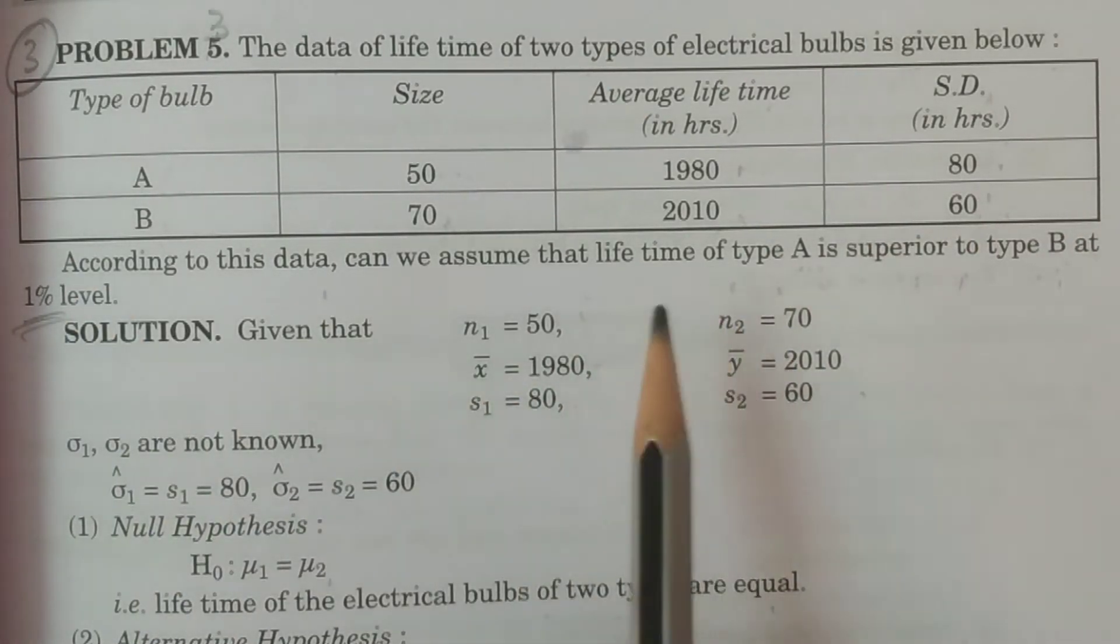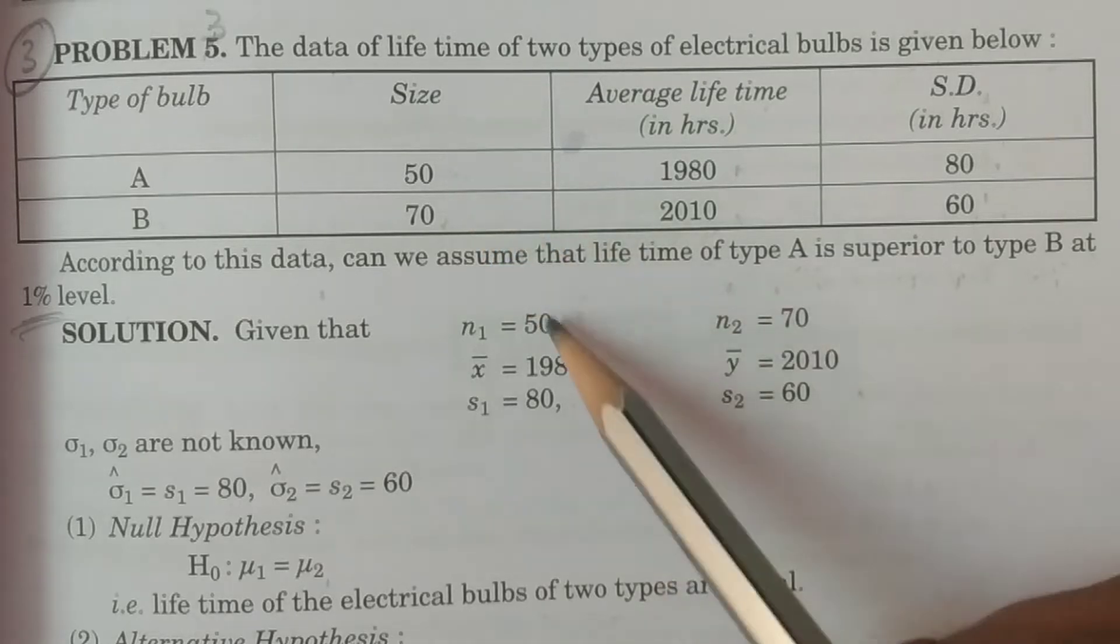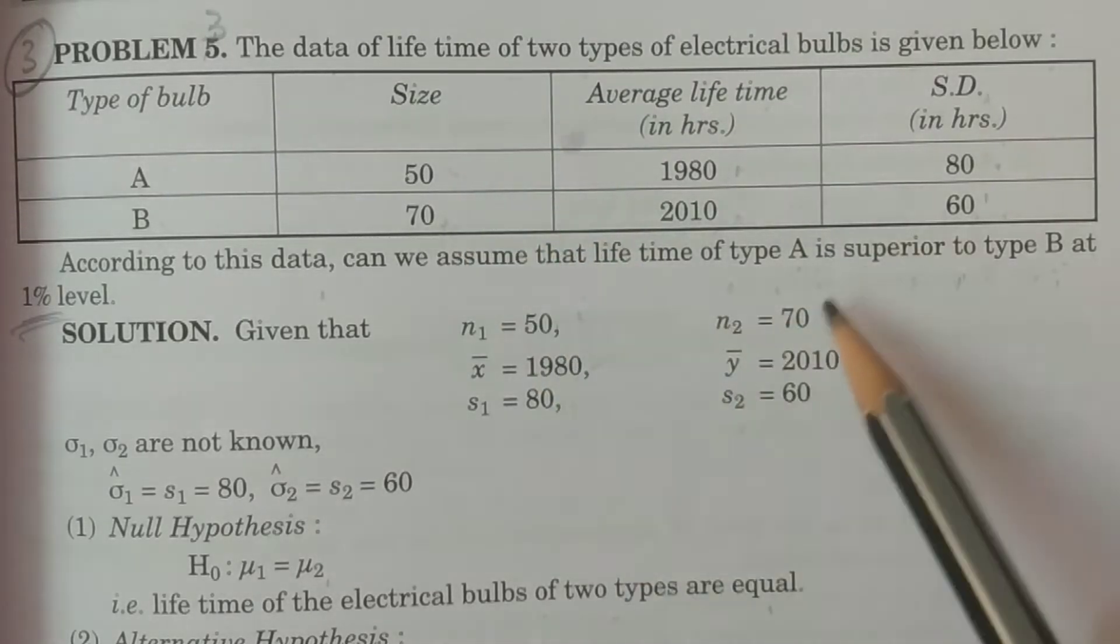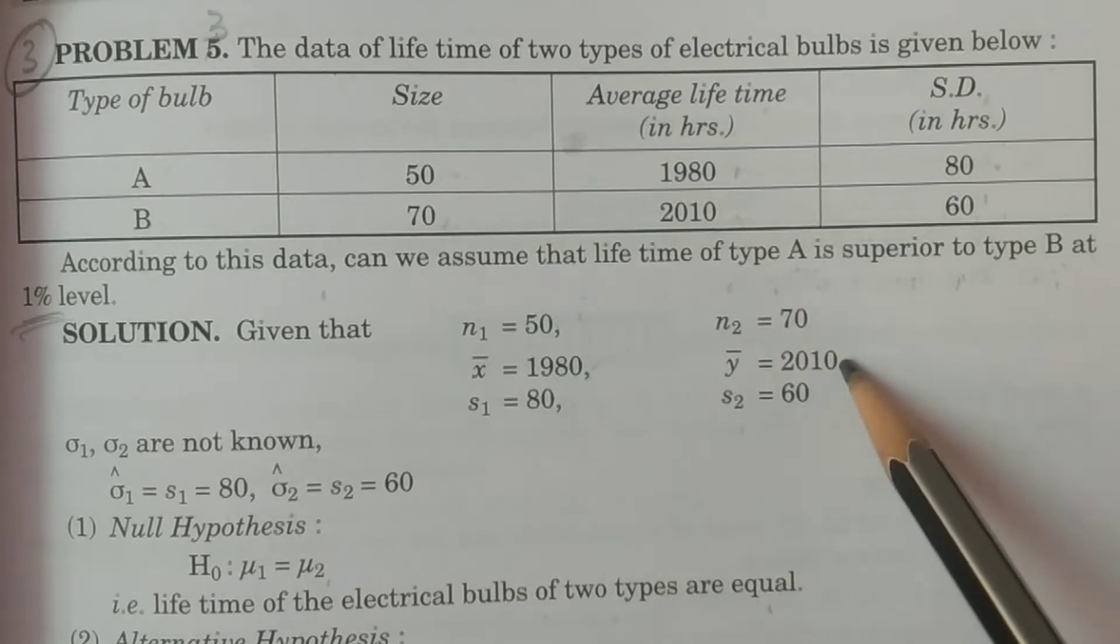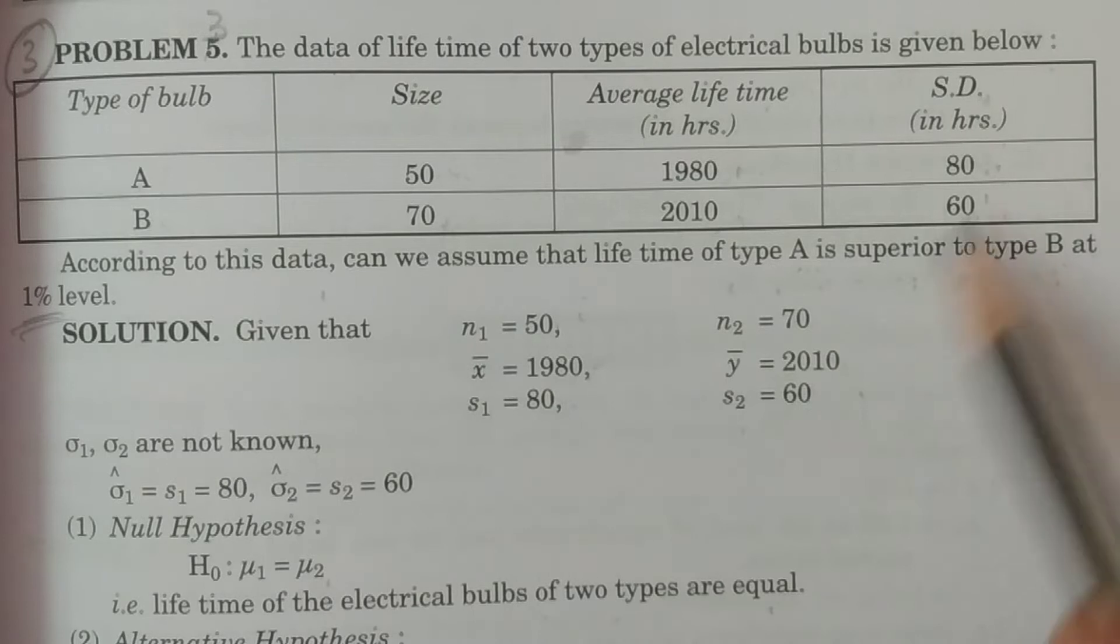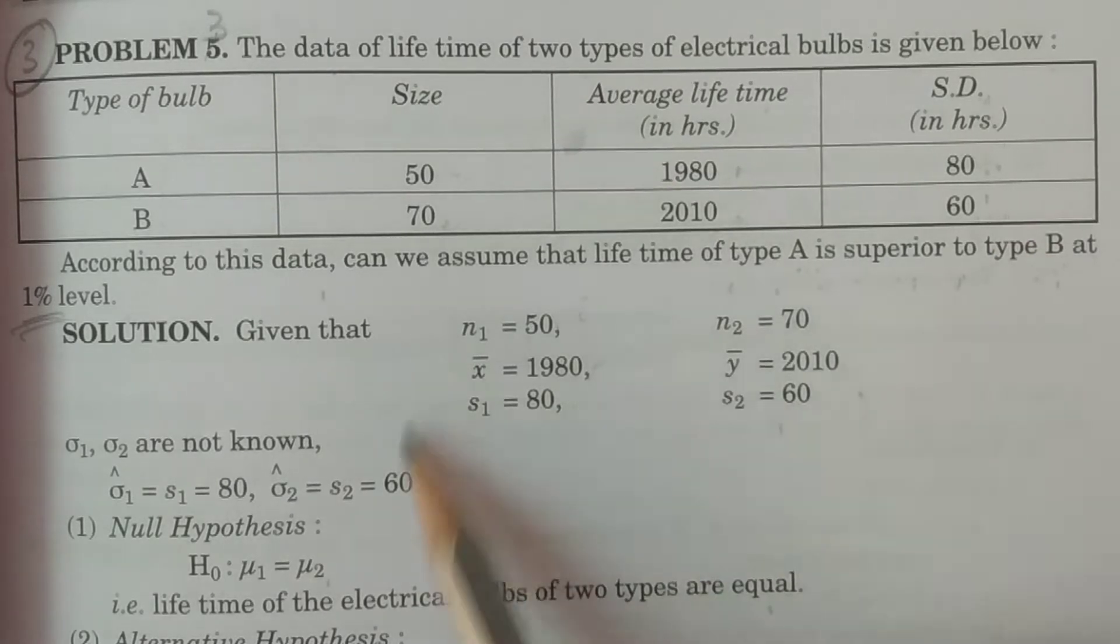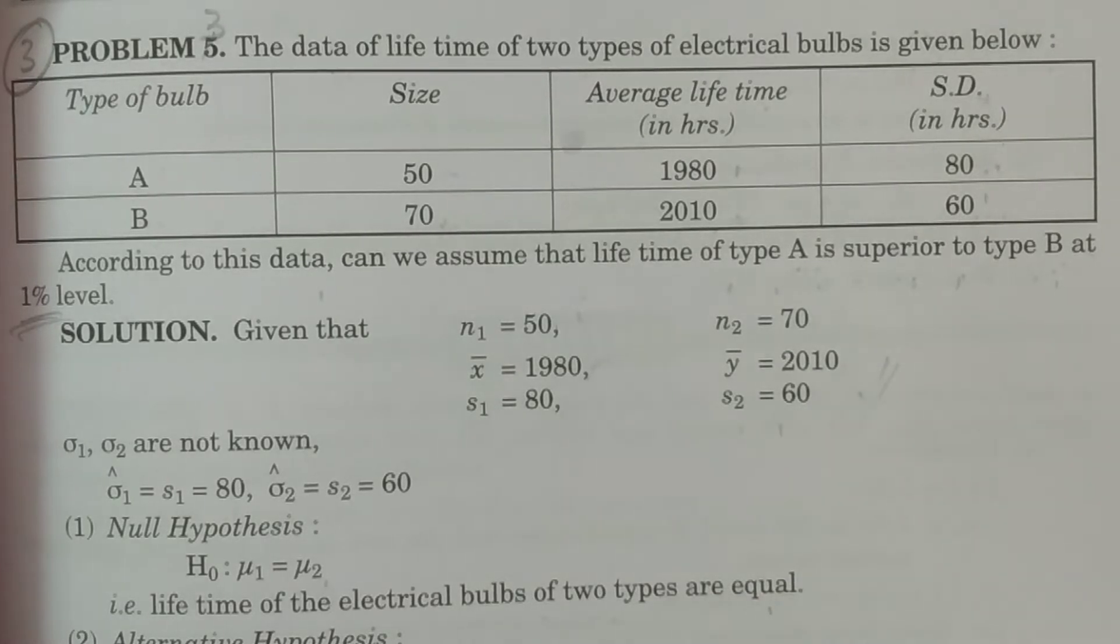Population variances are not known. Given data: n1 equals 50, n2 equals 70, x bar equals 1980, y bar equals 2010, and s1 equals 80, s2 equals 60. These are the given values.